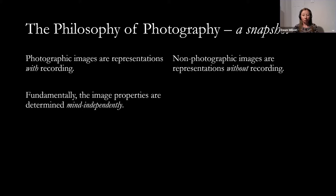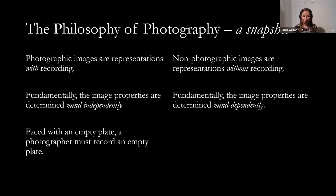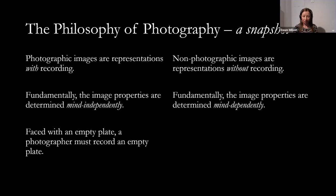Fundamentally, we're claiming that the image properties of a photographic image have been determined mind-independently. The technological process by which the image acquires its properties has not had intervention from human agency in a way that means properties are there because a human being modified them. The contrast is that the image properties of drawings, paintings, and engravings are there because a human mind determined what properties should appear. Put more straightforwardly: faced with an empty plate, a photographer must record an empty plate, whereas a painter can depict a plate that is empty, broken, or fruit-laden.